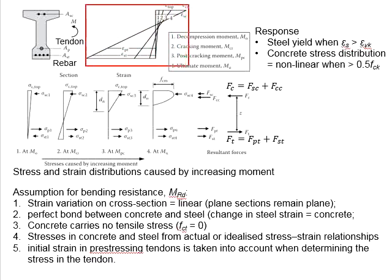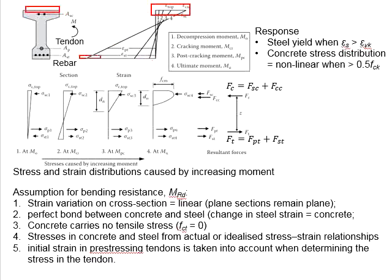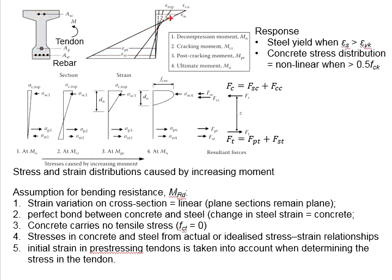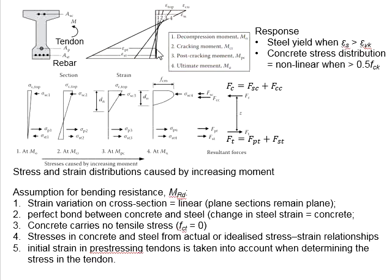Now let us look at the strain response of the cross-section. The strain represents the deformation of the beam section. This represents the strain of the top part of the beam, and this represents the strain of the bottom part. It is assumed that the relationship from the top to the bottom of the beam in terms of strain is always linear — a straight line. The development of strain in the cross-section changes in accordance with the magnitude of moment, as indicated by numbers 1 to 4 as listed in the moment diagram.